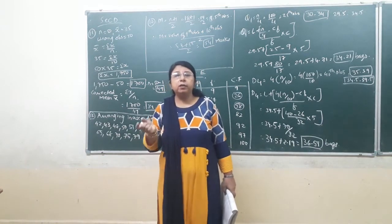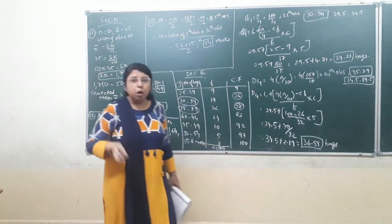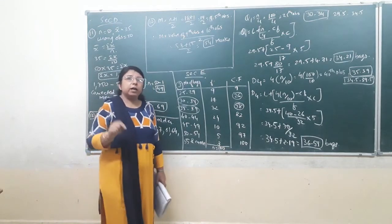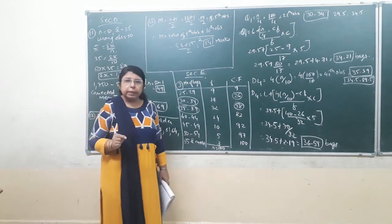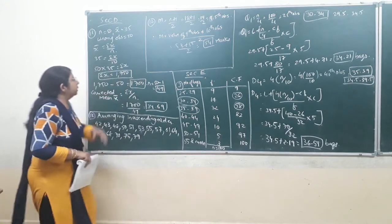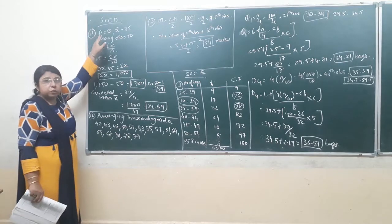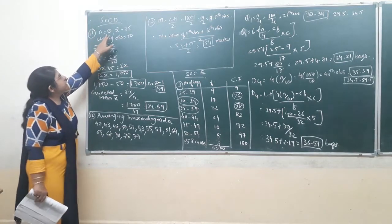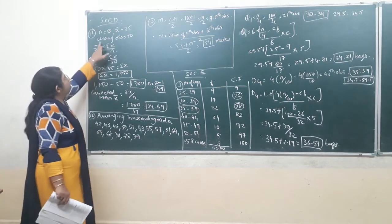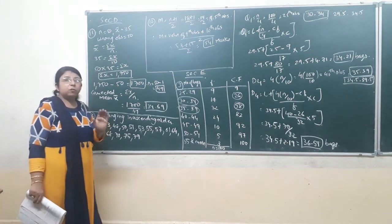So first of all, we have to find the total of all the observations, that is sigma x. From that sigma x, we have to deduct the wrong observation and again find the new mean, or the corrected mean, by the corrected value of sigma x. So let us see the calculation on the board. The first data that is n, number of observations, is given in the question that is 50. X bar is also given in the question, that is 35. Now the wrong observation that is 50 — we will remove it, but we can remove it only after finding the value of sigma x.